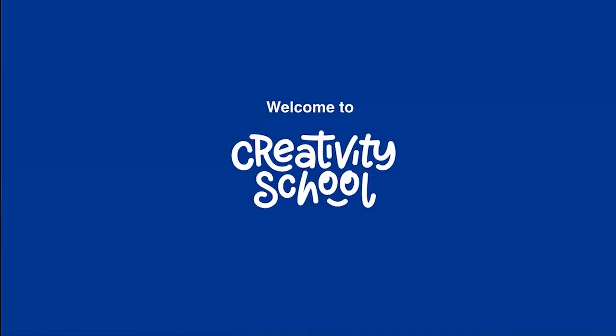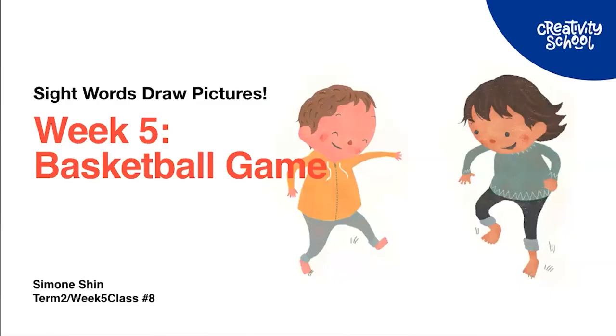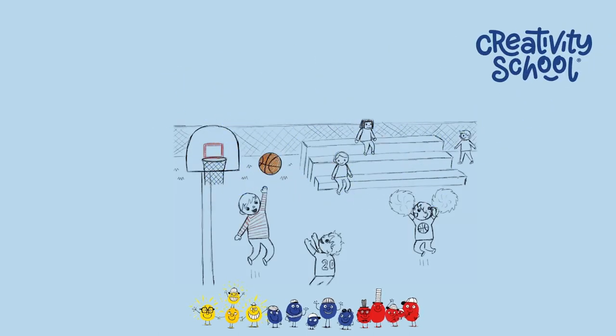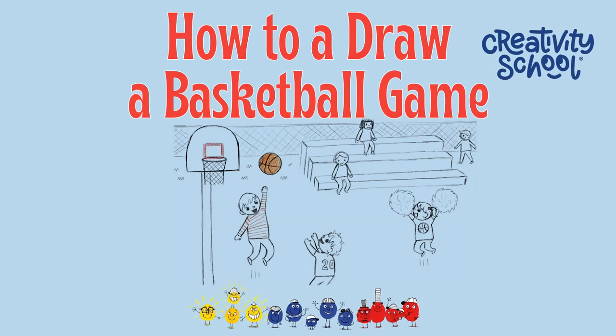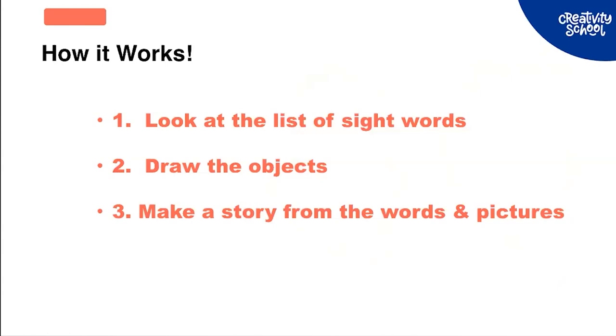Welcome to Creativity School! We're going to draw some parts of a basketball game and hopefully you guys can draw the basketball game that you want. How it works is that we look at the list of sight words as always, we draw the objects, and we make the story from words and pictures.